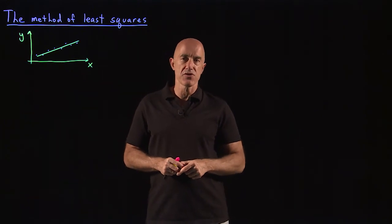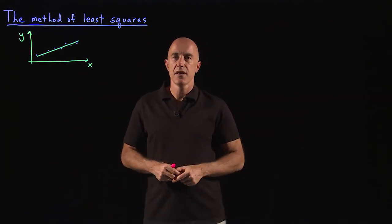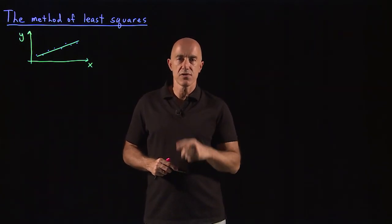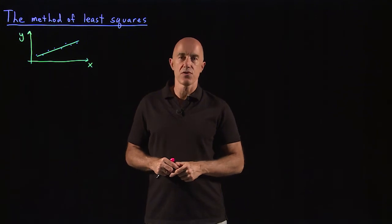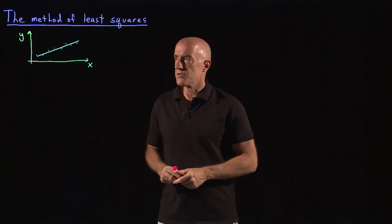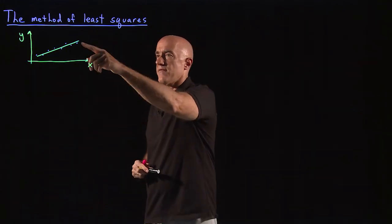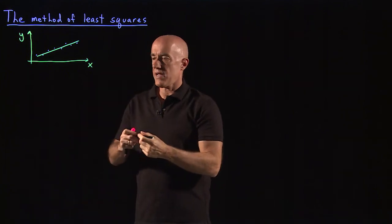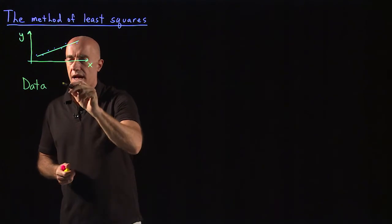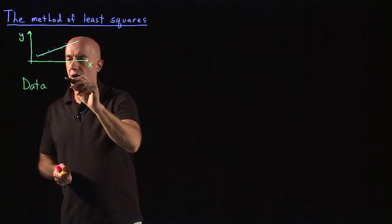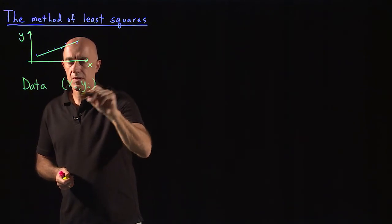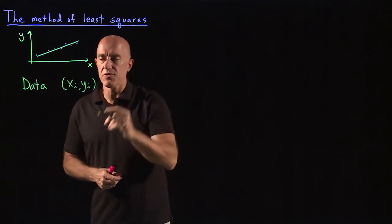If you took my matrix algebra for engineers course, you would have seen this example already using matrices and vector spaces. Here I'll show you how to solve this problem using partial derivatives. The problem is that you have a bunch of data shown as these dots, which we can write as (x_i, y_i), where the x_i are given.